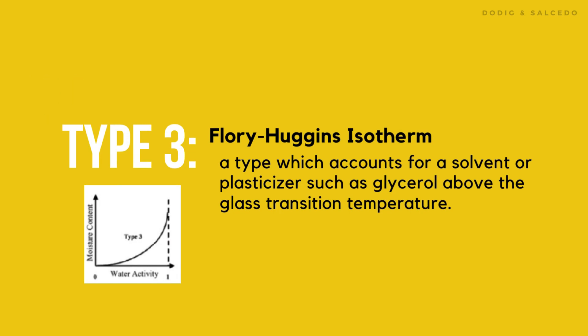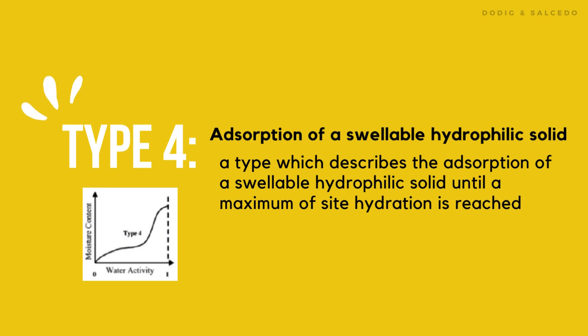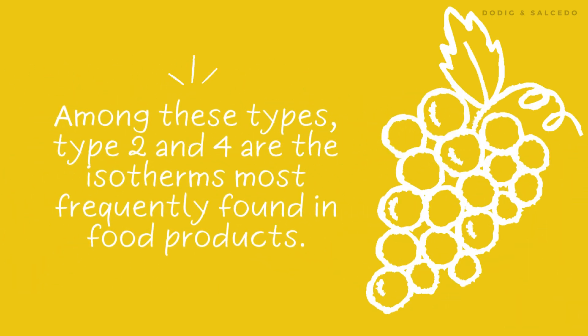For Type 3, known as Flory-Huggins isotherm, it accounts for a solvent or plasticizer such as glycerol above the glass transition temperature. For Type 4, it describes the adsorption of a swellable hydrophilic solid until a maximum of site hydration is reached. For Type 5, the Brunauer-Emmett-Teller or BET multilayer adsorption isotherm, it is observed in the adsorption of water vapor on charcoal and is related to isotherms Types 2 and 3. Among these types, Types 2 and 4 are the isotherms most frequently found in food products.